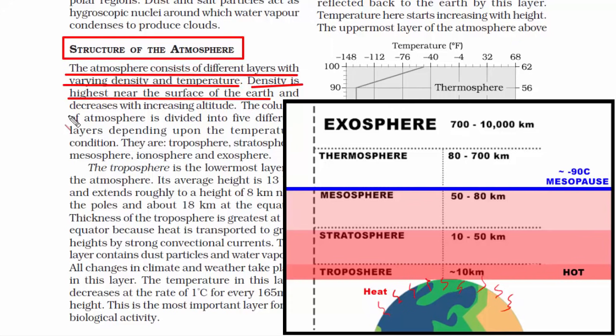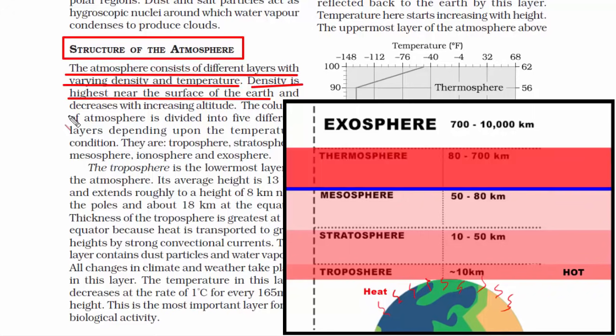Now after mesosphere, we have thermosphere. By the word thermo, you can relate the word thermal which means heat. Here the temperature goes up to 500 to 2000 degrees celsius.